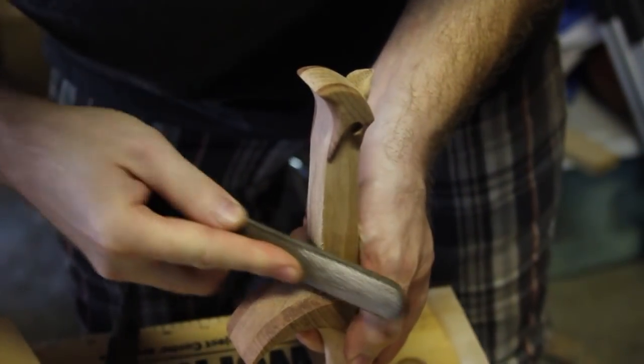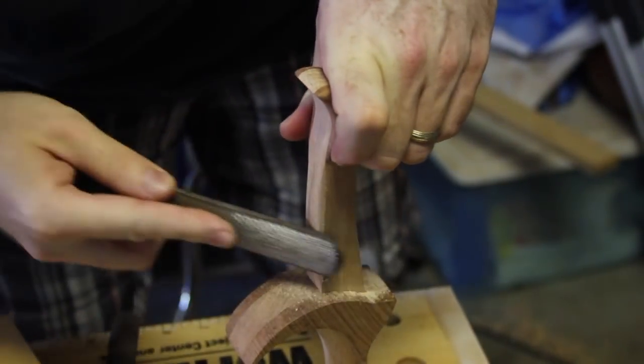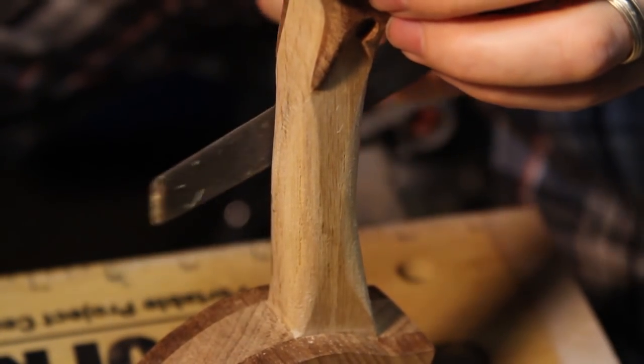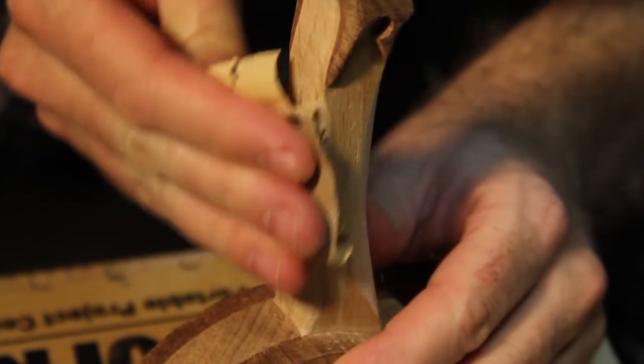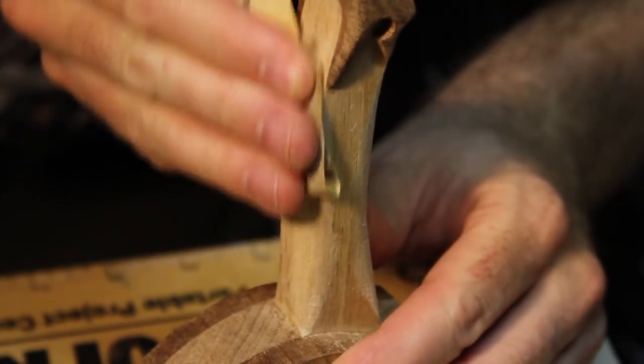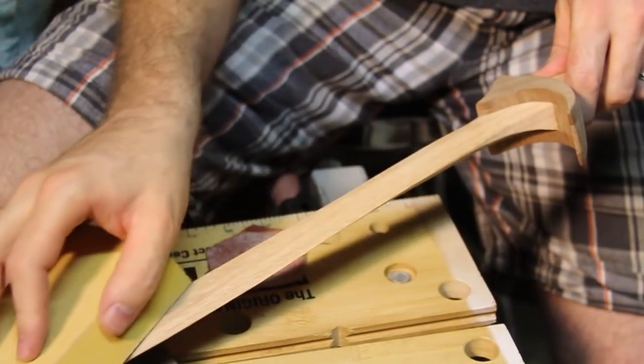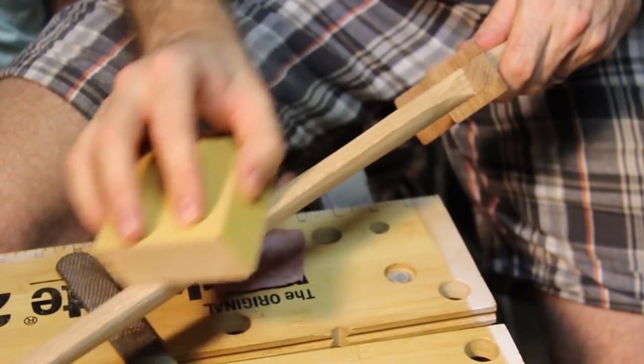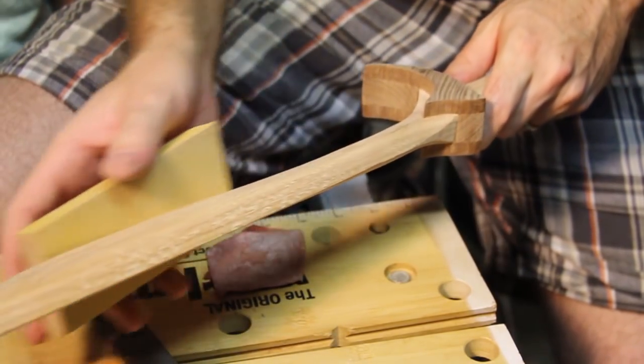The last thing to shape was the handle, and this was pretty much the same process as before. I finished everything off with a final pass of the 320 grit sanding pad. This gave me a nice smooth surface.